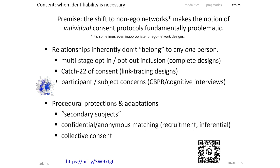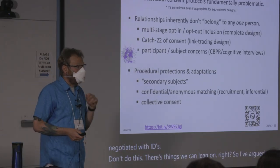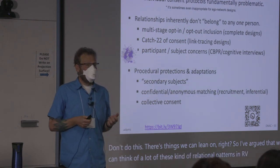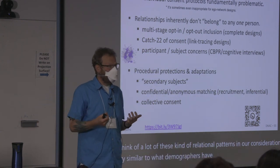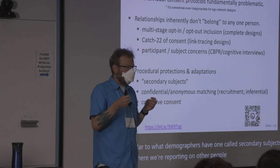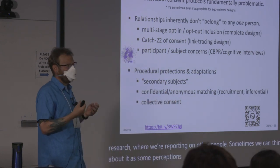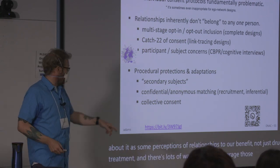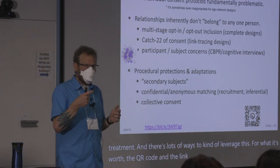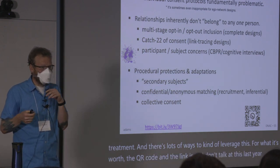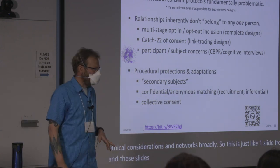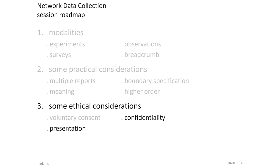The good news is there are things we can lean on. I've argued we can think of a lot of these relational patterns in IRB considerations as similar to what demographers have long called secondary subjects research — where we're reporting on other people. We can also think about it as perceptions of relationships, to our benefit. There are lots of ways to leverage this. There's also a QR code and link to a talk I gave last year on ethical considerations in networks broadly — those slides should be posted.